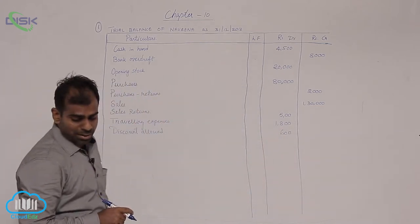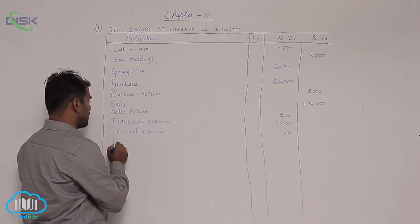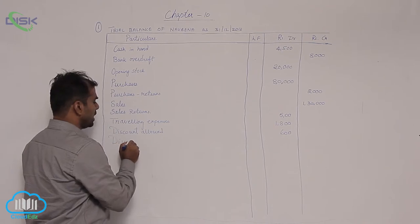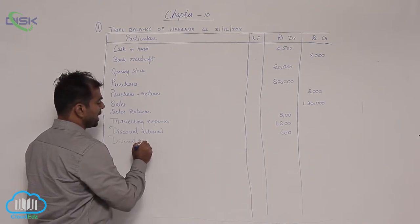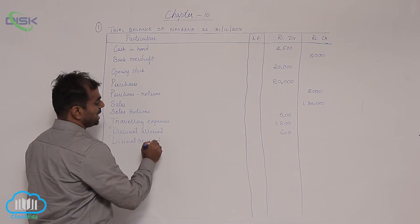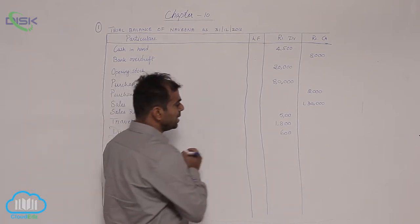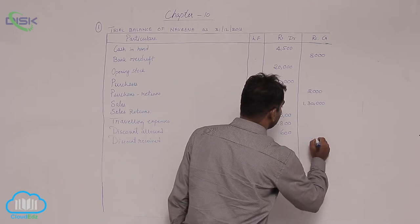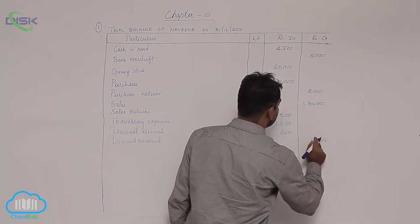Next is you have your discount received. You remember your cash book, so it was there on the credit side. So it shows credit balance. Discount received being a gain, it shows credit balance. Then 1500.